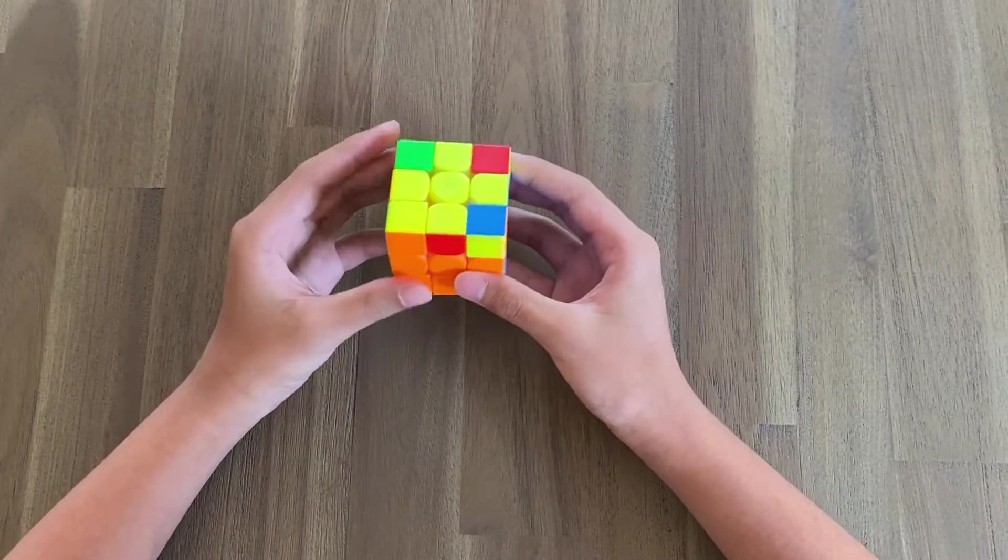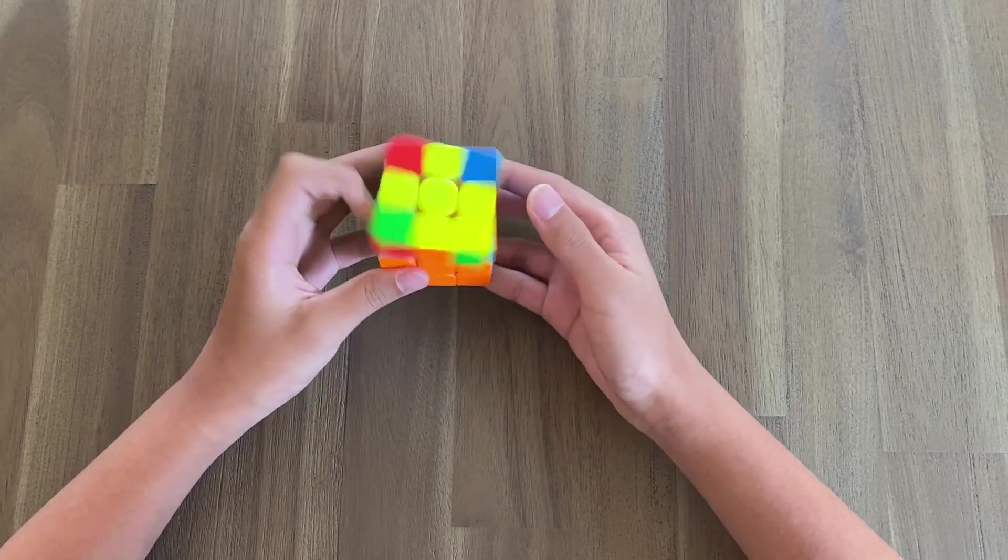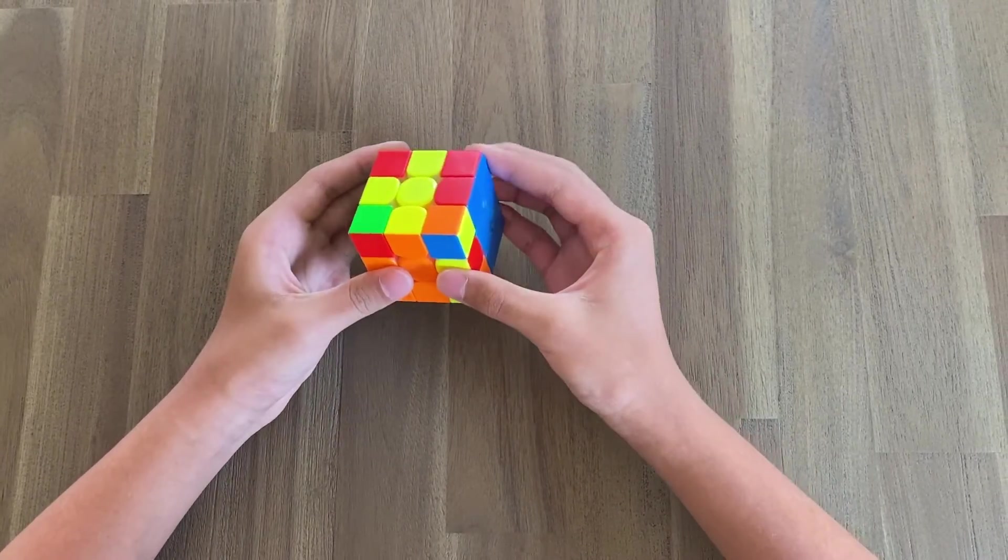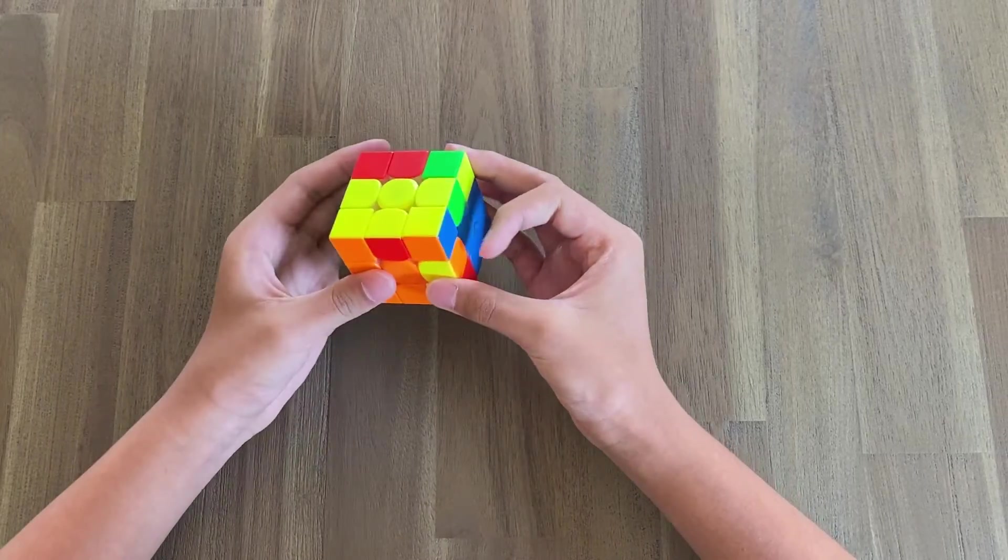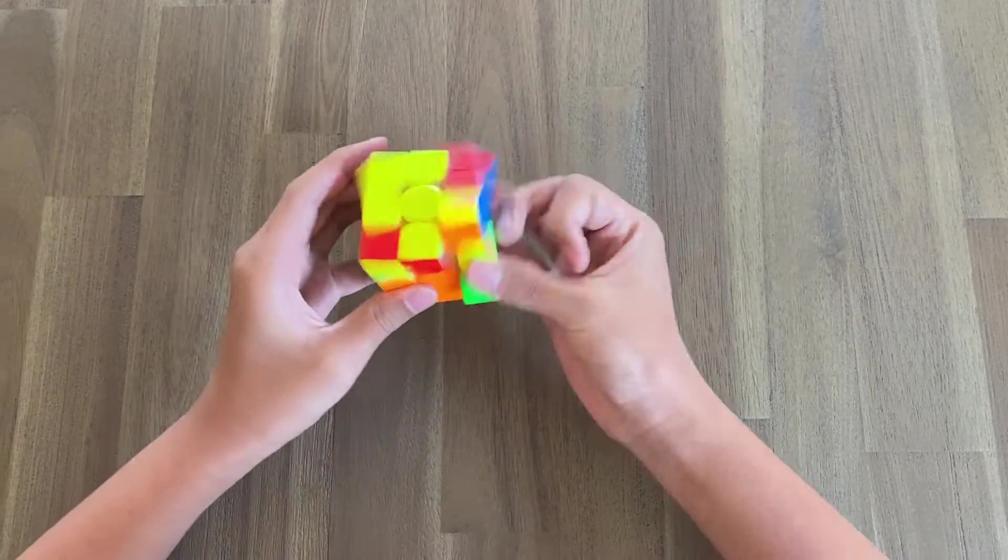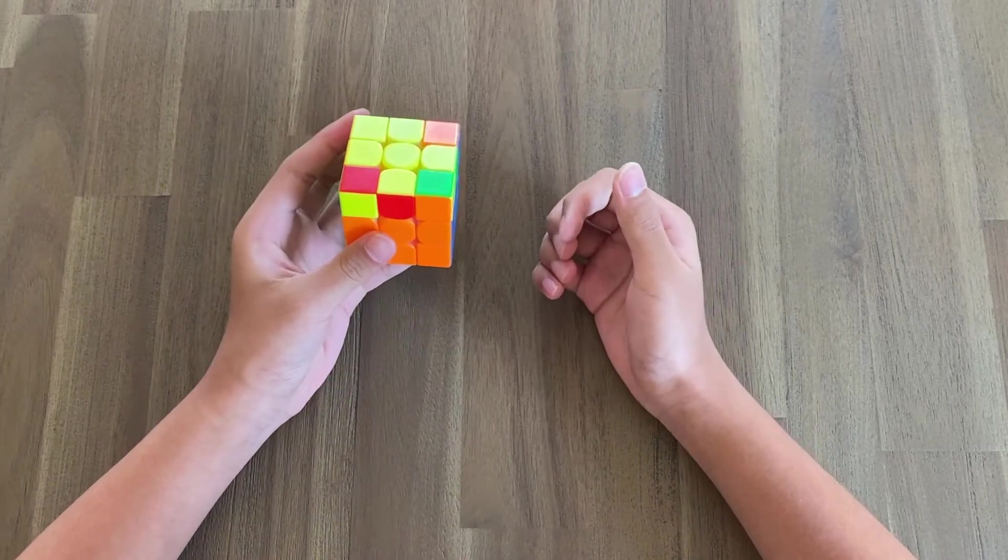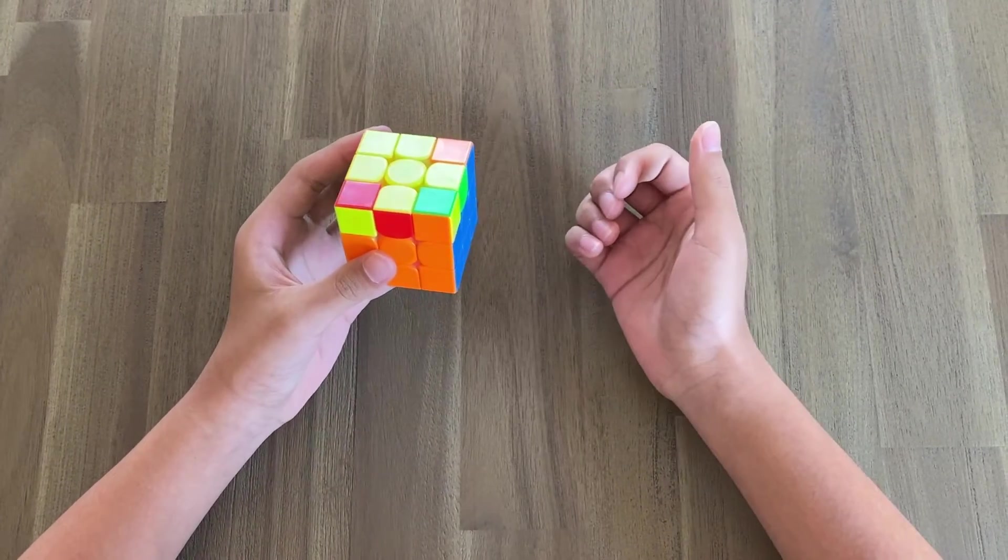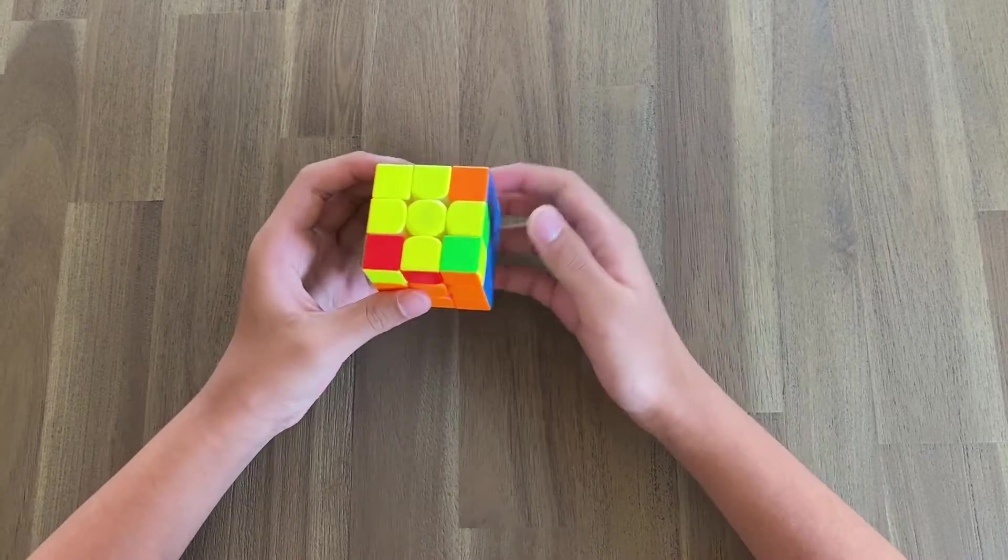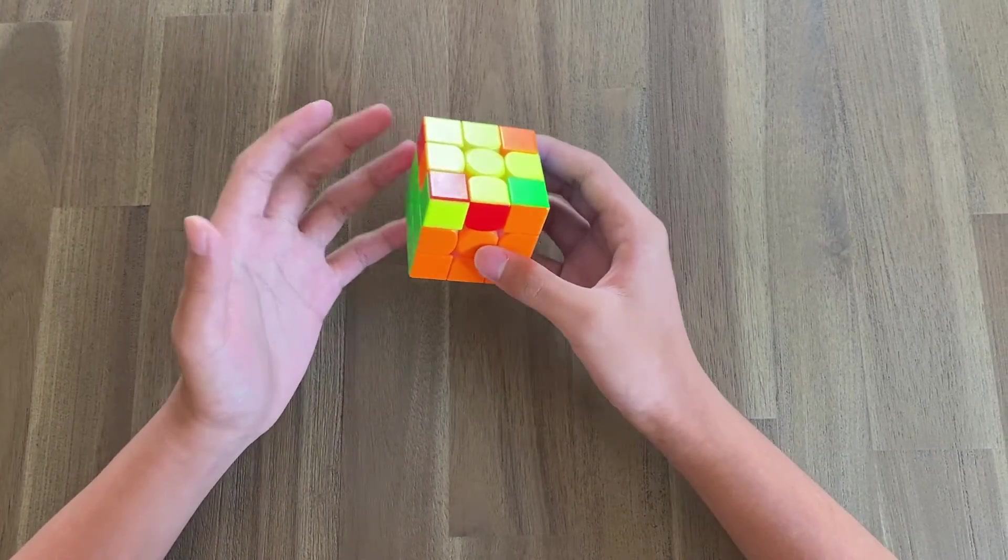However, having too slow of a TPS is not good either. So I have a Sune case here. And if I do this case super slow, I'm basically wasting time because I can do this case very fast. And if you're purposely slowing down just to do look ahead when there's no look ahead to do, such as an OLL or PLL, it's not worth the time.